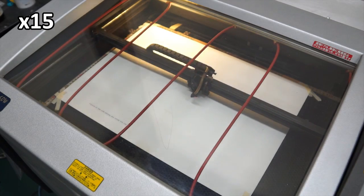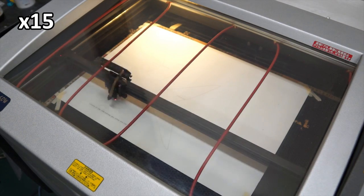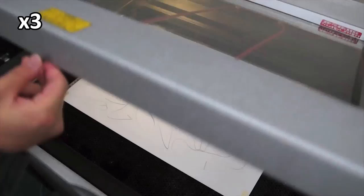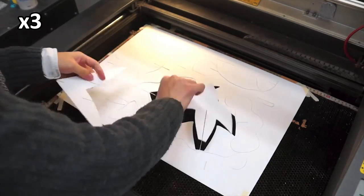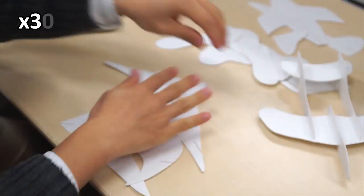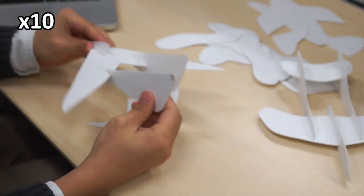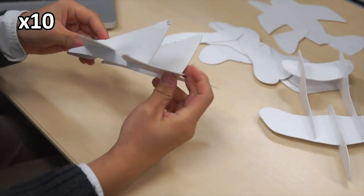Our design tool generates fabrication plans, and we laser-cut planes from 1mm-thick foam core board. Interlocking slits make plane assembly straightforward, and we add small plastic braces to enforce rigidity.